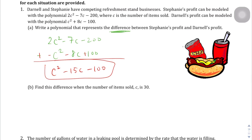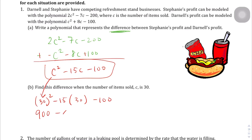Now find the difference when the number of items sold is 30 — c is 30. So anytime we see a c, we're going to plug in 30. So 30 squared minus 15 times 30 minus 100. 30 times 30 is 900, minus 15 times 30 which is 450, minus 100 is going to give us 350.